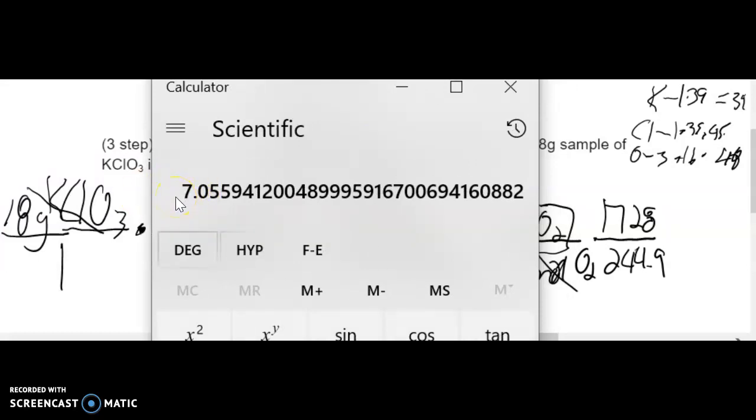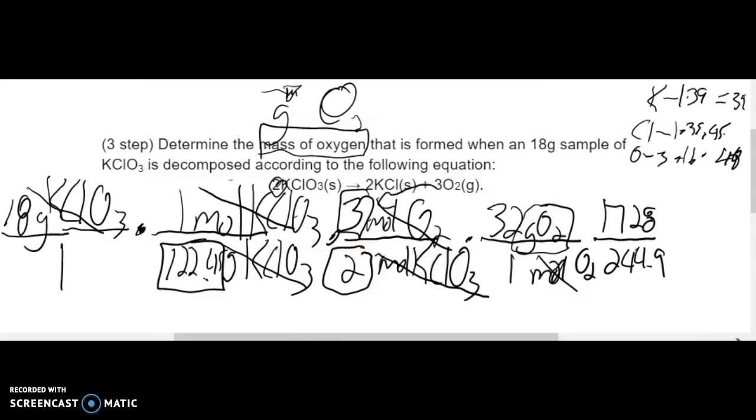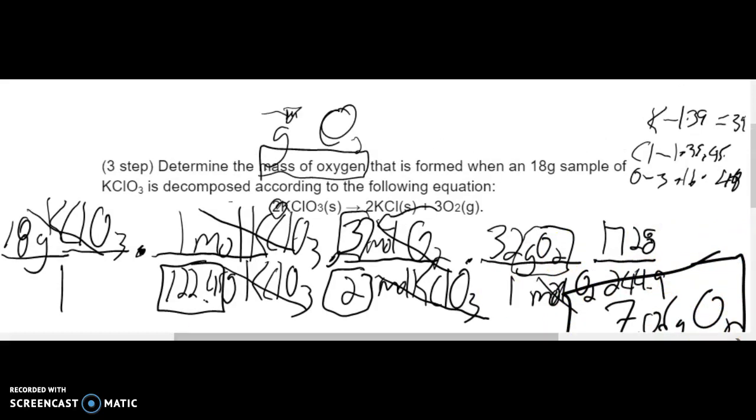That's going to be 1728 divided by 244.9. That's going to be my answer in grams of oxygen. 7.06 grams of oxygen. Final answer. 7.06 grams of oxygen.